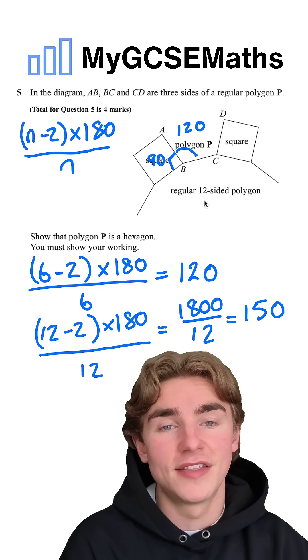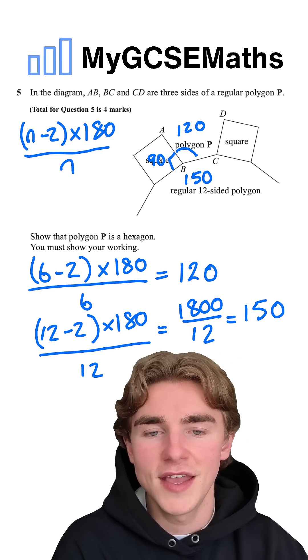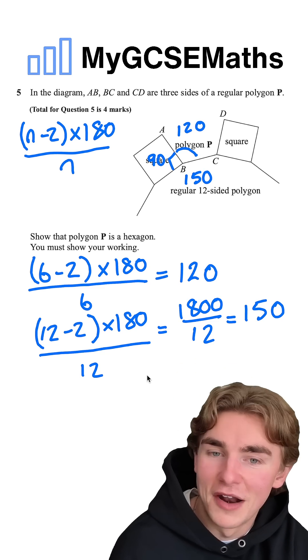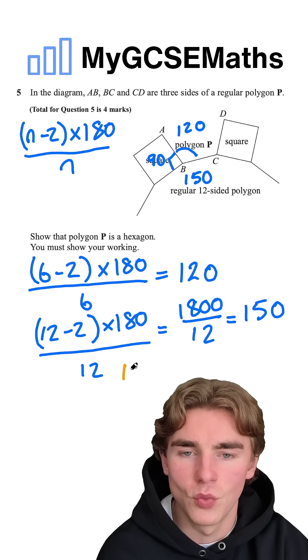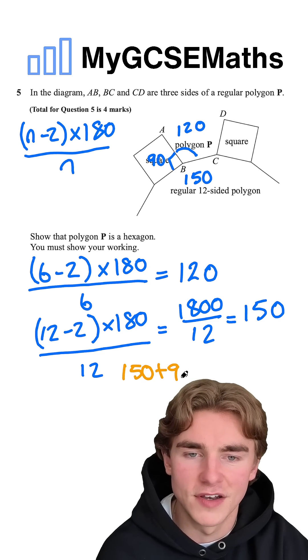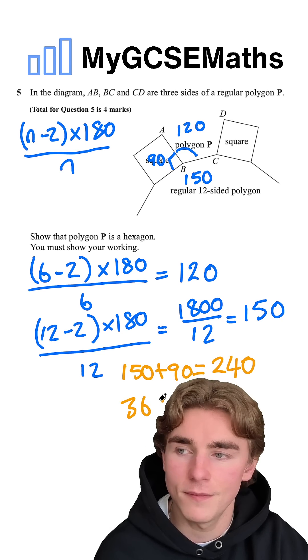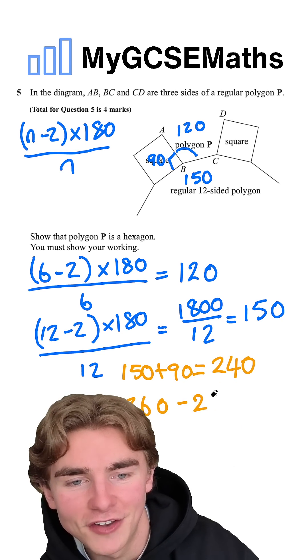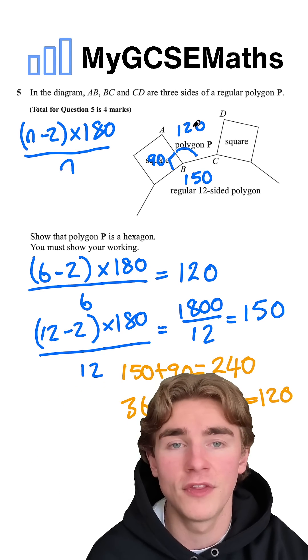So we know that this one is 150, so can we show that this angle here is 120? We know that our two other angles are 90 and 150. We can do 150 plus 90 is going to be equal to 240, then we can do 360 take away that 240, which is 120. So we have shown that this angle here is 120.